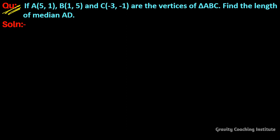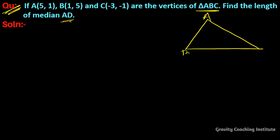If A, B, and C are the vertices of triangle ABC, find the length of median AD. In this question, ABC is a triangle in which AD is the median. The coordinates are given: A is (5, 1), B is (1, 5), and C is (-3, -1). We need to find the length of the median.